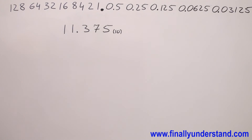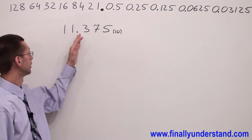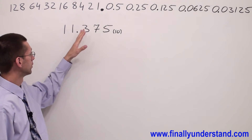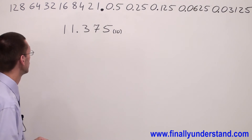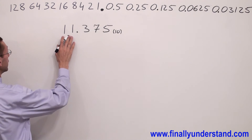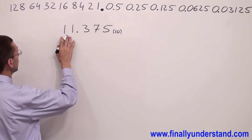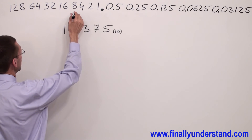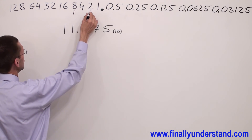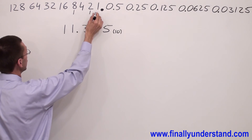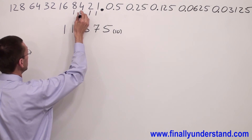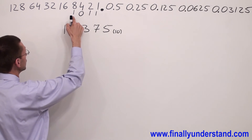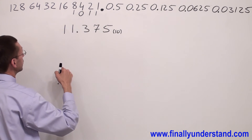Let's take a look at this example. We have 11.375. First, we are going to find binary 11. 11 we can make from 8, and 2, we have 10 and 1 — we have 11. The not-used weights we are going to mark by 0. This is my binary 11.